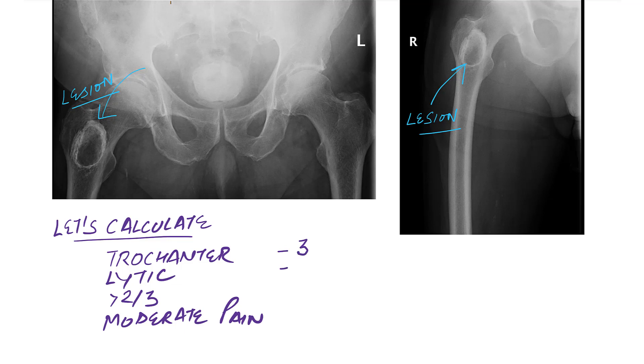It occupies about two-thirds or more, just more than two-thirds of the diameter. Let's say the pain is moderate, so the MIREL score is about 11. Using our criteria, this lesion should have a prophylactic fixation. You can use a dynamic hip screw or a nail to prevent fracture.